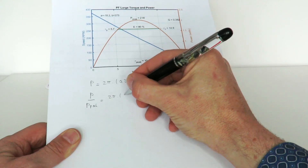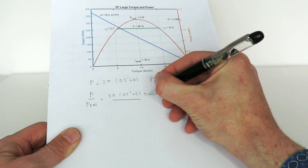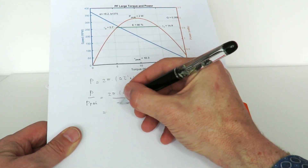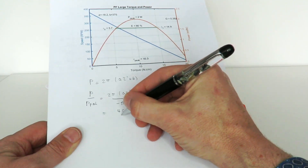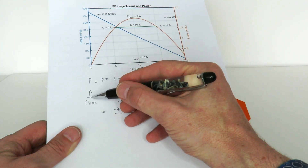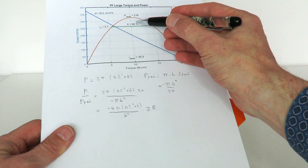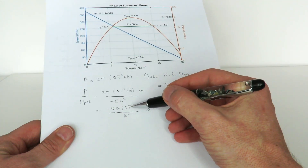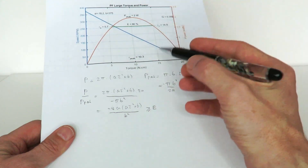Substituting and simplifying, we get the ratio P/P_peak = -4a(a·tor² + b·tor) / b². We want this ratio to be greater than or equal to some efficiency e, which can be set to 80%, 90%, 70%, or any value. This gives us a quadratic equation in tor with two solutions corresponding to the two switching points.